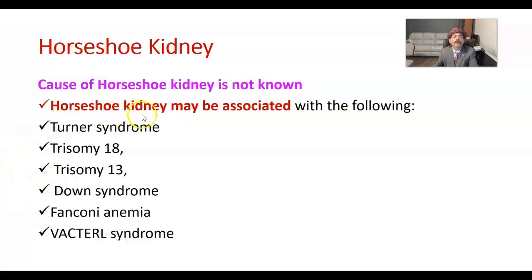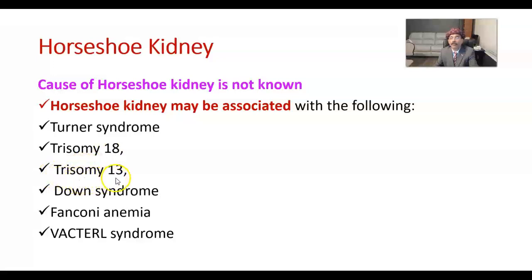Horseshoe kidney may be associated with the following conditions: Turner syndrome, that is chromosome 45X0; Trisomy 18, also known as Edwards syndrome; Trisomy 13, also known as Patau syndrome; Down syndrome; and Trisomy 22.